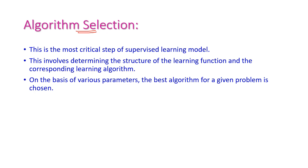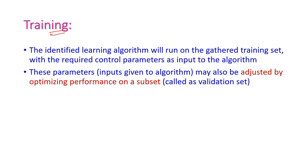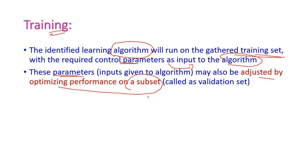Algorithm selection is the most critical step in the classification model. We need to determine the structure of the learning function and the corresponding learning algorithm — based on the parameters of the input data, we select the best algorithm so that the classification model provides better results. The next step is training the machine learning model: the learning algorithm runs on the training data set with required control parameters, which may also be adjusted by optimizing performance on a subset of the training data set called the validation set, which is used to validate the algorithm.